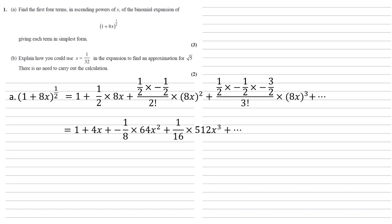So this simplifies down to 1 plus 4x. The half times a negative half over 2 factorial gives us negative an eighth times by the square of 8x, so 64x squared. That final fraction is a 16th and the cube of 8x is 512x cubed. So that gives us 1 + 4x - 8x² + 32x³.